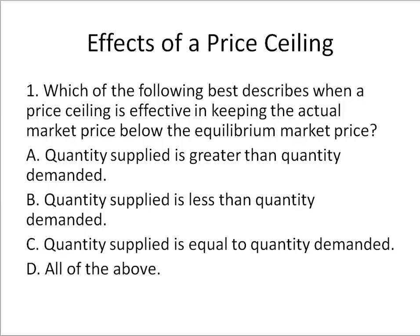Let's start out with price ceilings. Here's quantity, price, an upward sloping supply curve, and a downward sloping demand curve. A price ceiling is a maximum price — you can't go above it. So it's a barrier that won't let you go up.